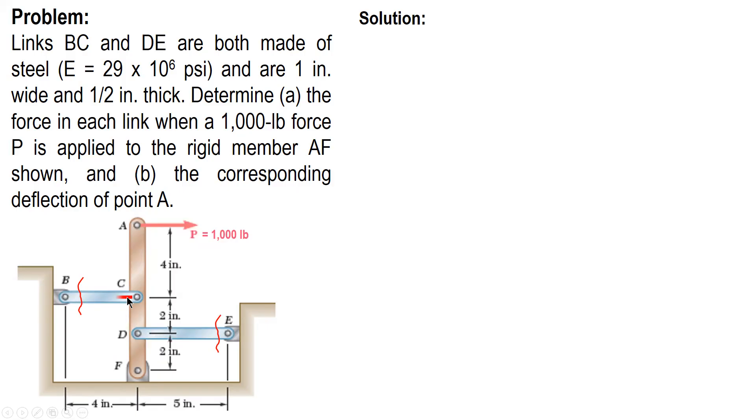For member BC, tensile force directed to the left. And for DE, compressive force towards member EF, to the left also. This one is away from member EF, this one towards member EF. At F there's a pin, so there's a reaction, reaction in X and reaction in Y. But since we are not interested in the value of the reaction at F, we will not sum up for the horizontal. We will go directly to summation of moment about F since we are only interested with FBC and FDE.